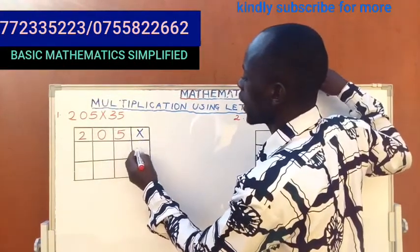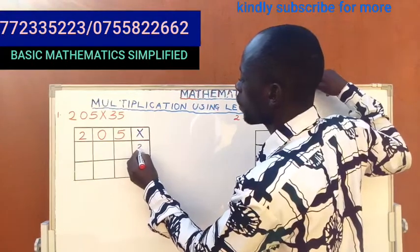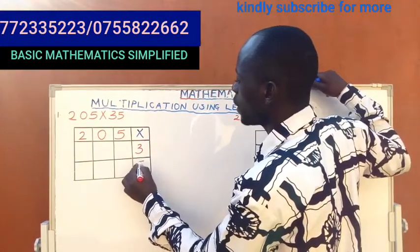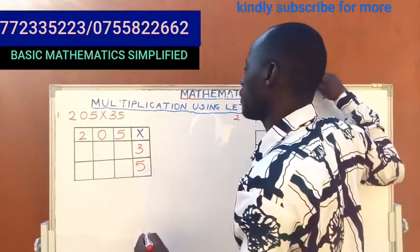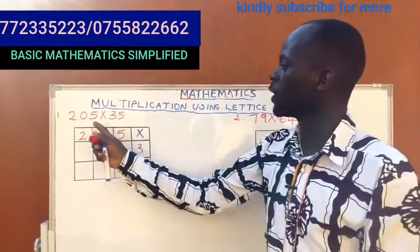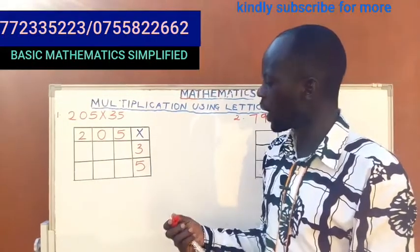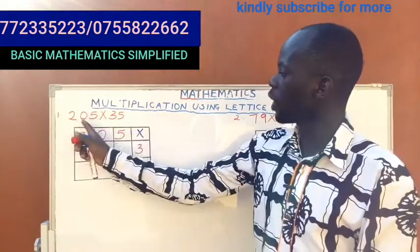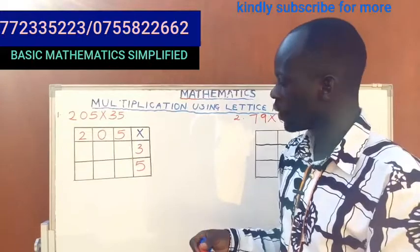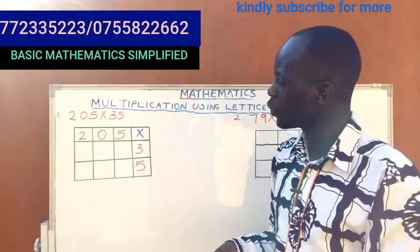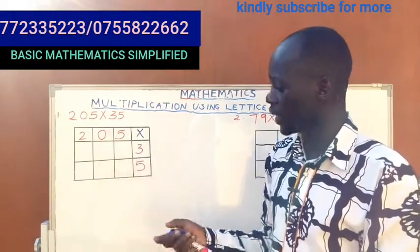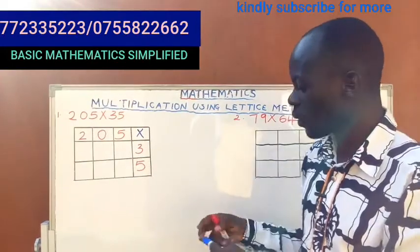Under the multiplication sign we are multiplying by 35, so under that you put 3 here, then you put 5. That is how we arrange it. The first one is three digits and the second one is two digits, so we are multiplying 205 by 35. Now the first thing that you're supposed to do after you have represented them like that...